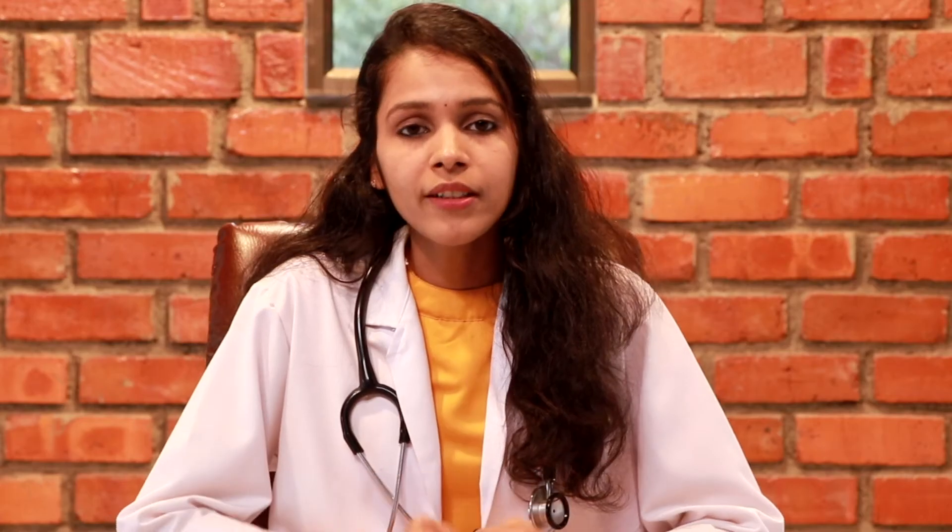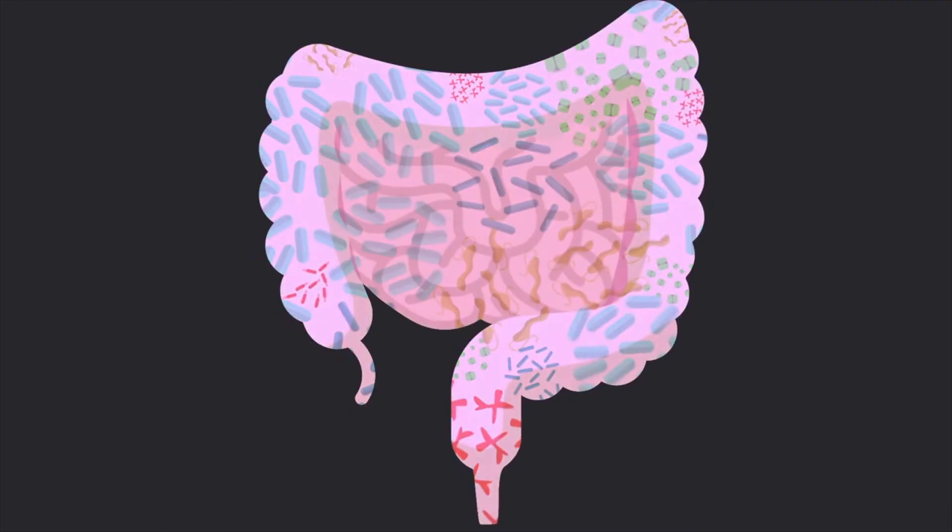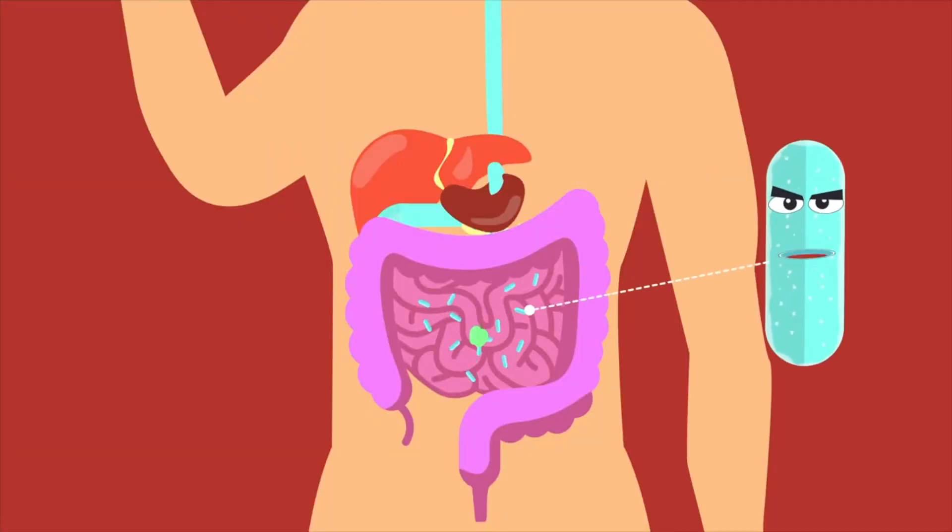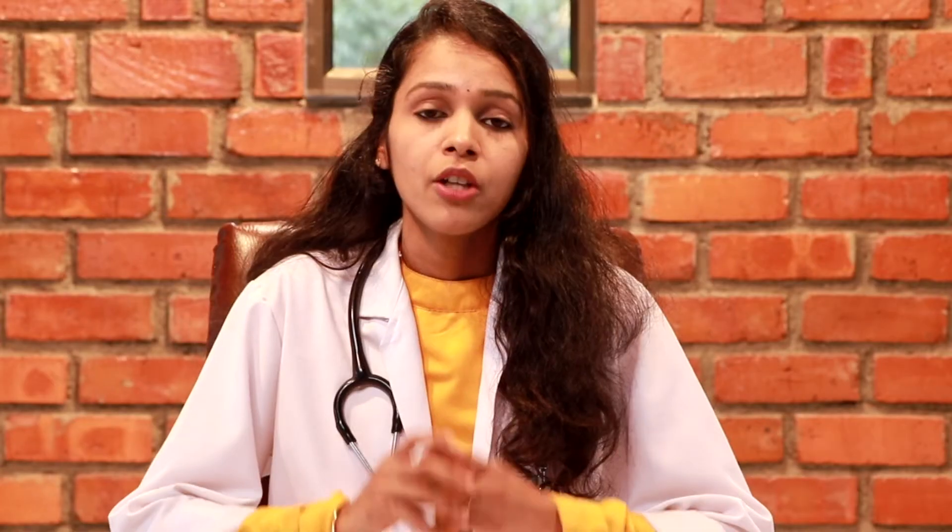After absorbing all the nutrients, the undigested food will reach our large intestine. The fibers which are not digested are being digested by the gut bacteria to produce gases and short-chain fatty acids. Short-chain fatty acids are the valuable nutrients that your colon cells need. Colon cells are the cells which line the colon, and their main nutrients are short-chain fatty acids.